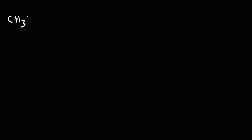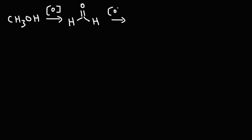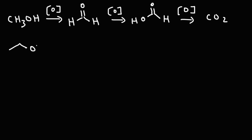In this video we're going to focus on the oxidation of alcohols. If you start with a methyl alcohol like methanol, when you oxidize it initially it's going to turn into an aldehyde. If you oxidize it further it's going to go to the carboxylic acid level, and upon complete oxidation it can convert all the way to CO2.